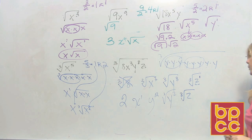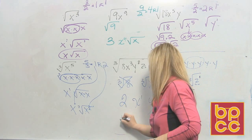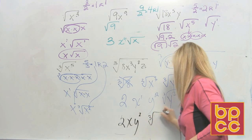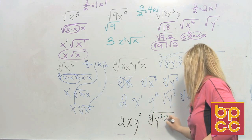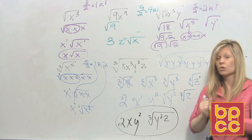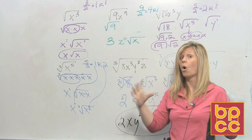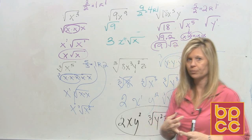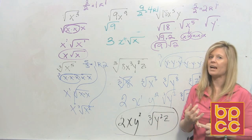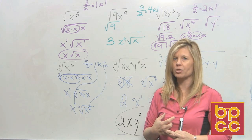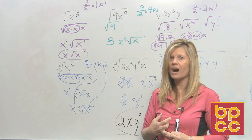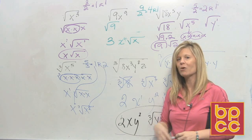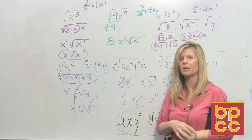That can't be the final answer yet. Write what's on the outside together: 2, x to the first (just x), and y squared. Inside the cube root symbol you have y squared and z — that's all connected by multiplication giving y squared z. So the final answer is 2xy squared times the cube root of y squared z. The rule summary: to square root or cube root numbers use your list of perfect squares and cubes; to square root variables divide the exponent by 2; to cube root variables divide the exponent by 3. If there's a remainder, that term stays inside the root symbol. Next video covers operations — multiplying and dividing radicals.